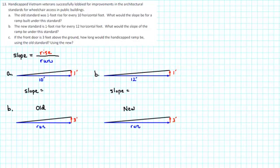Handicapped Vietnam veterans successfully lobbied for improvements in the architectural standards for wheelchair access in public buildings. Part A: The old standard was 1 foot rise for every 10 horizontal feet. What would the slope be for a ramp built under this standard?